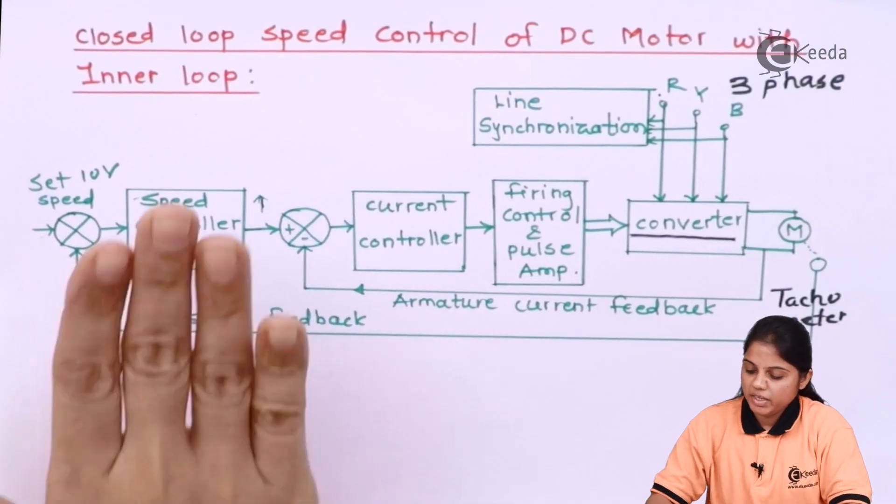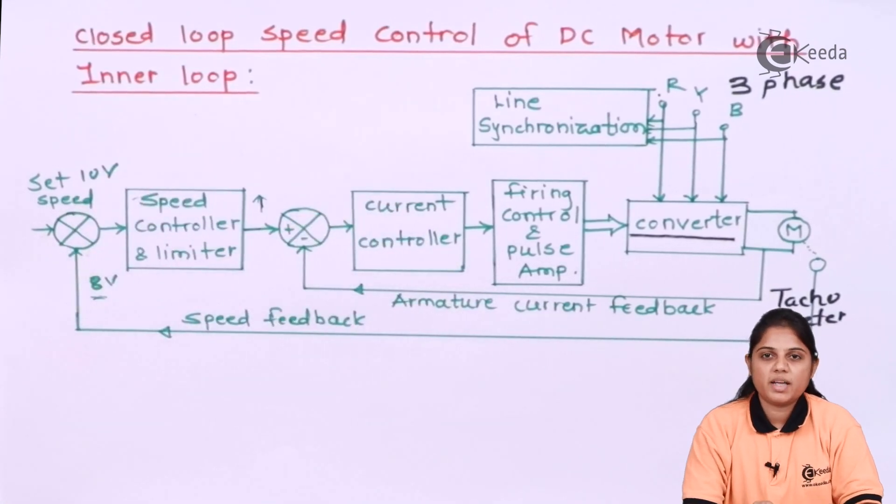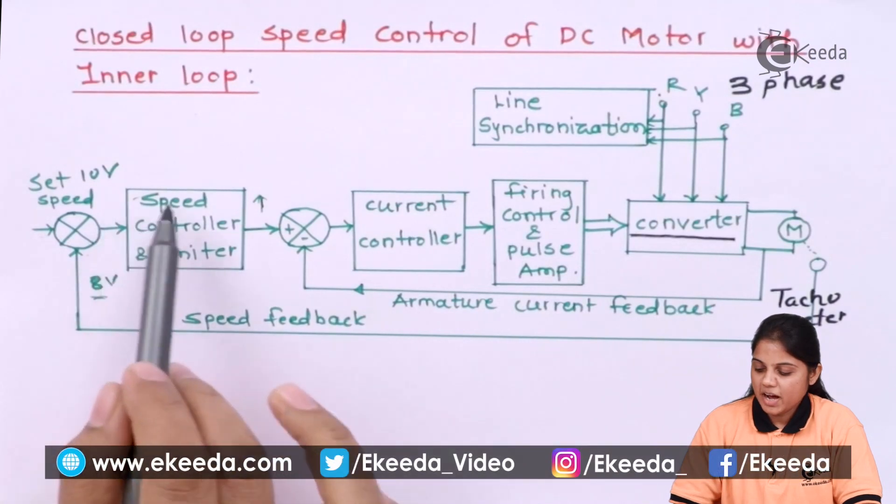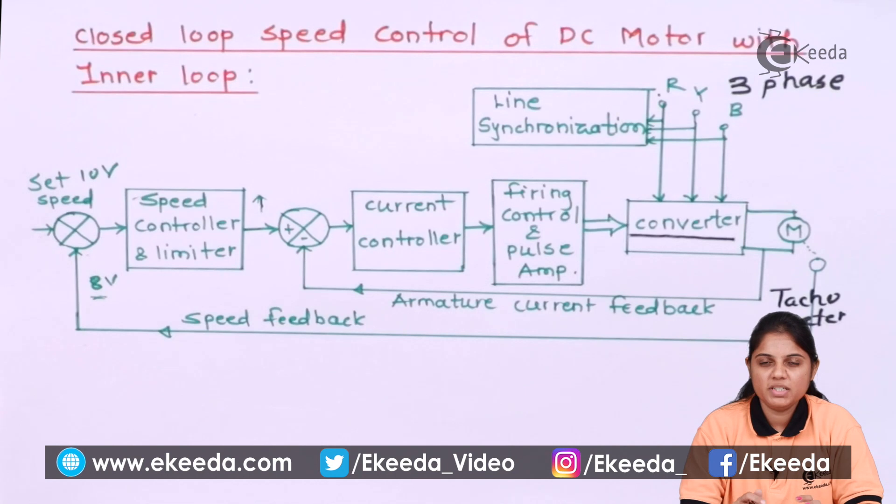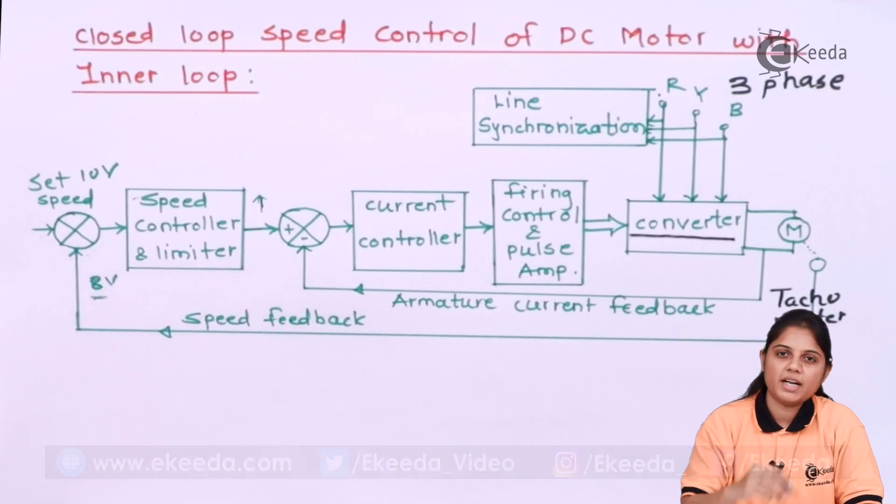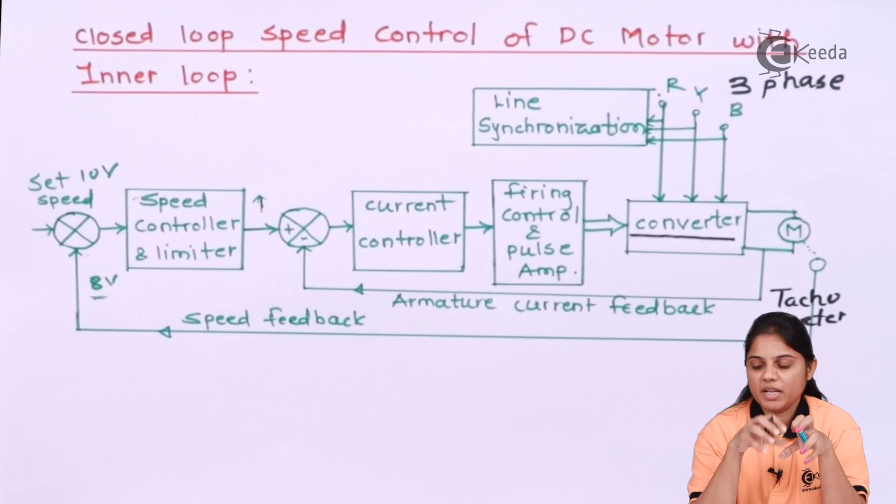Now I am talking about only having a speed feedback, I am not having the current controller. So in that case, now here we are assuming that we only have a speed feedback, we don't have a current feedback. That means it will give you feedback that my speed should be increased and accordingly action will take place and speed will be increased.